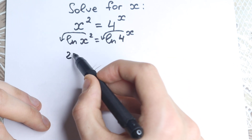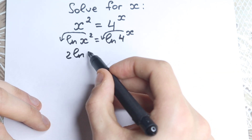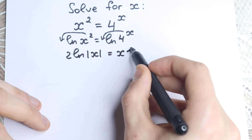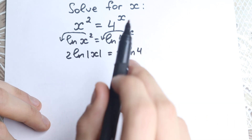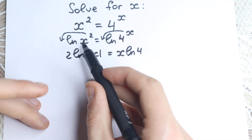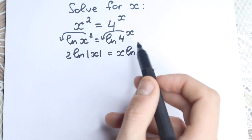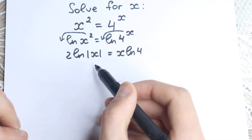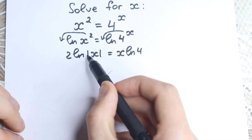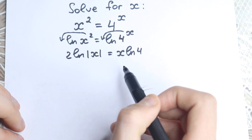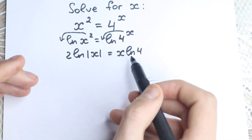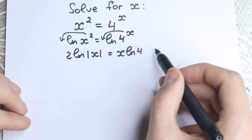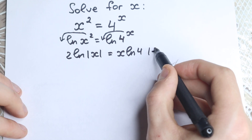Right now we have 2 times natural log of |x| equals x times natural log 4 — one really important moment: you need to put absolute value here, because x can be positive or negative and we don't know, so it's correct to write this with absolute value. Now we have constants and variables, so let's group our variables on the left side and constants on the right hand side. For this, let's divide both sides by 2.